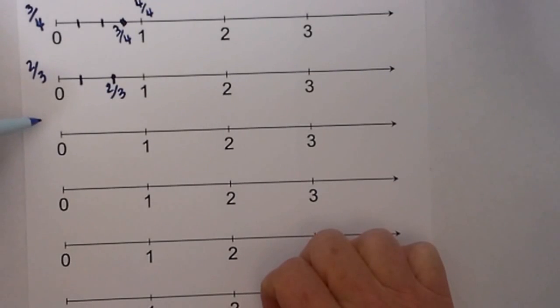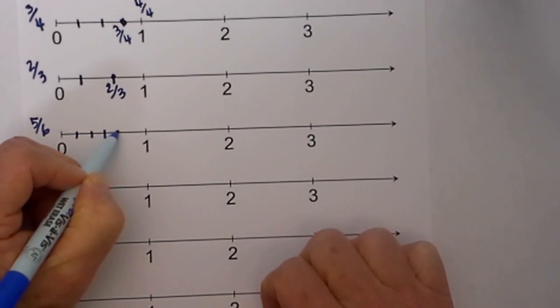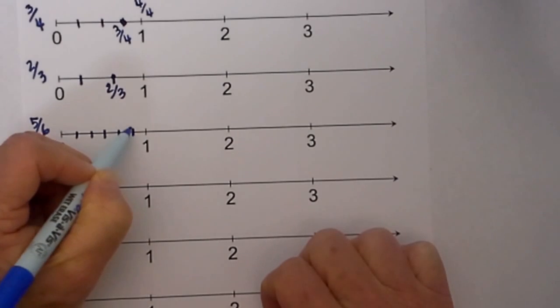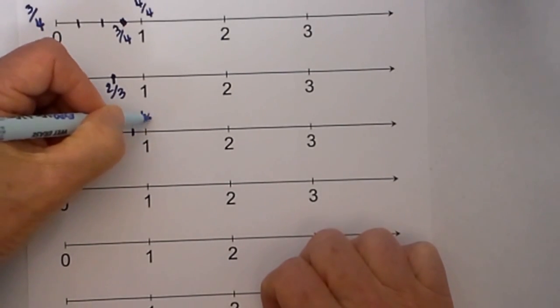Let's just go ahead for good measure and work two more. 5 sixths. We know we need to have 6 spaces in between so we will go 1, 2, 3, 4, 5 and this is 6. You know this 1 can be written as 6 over 6.